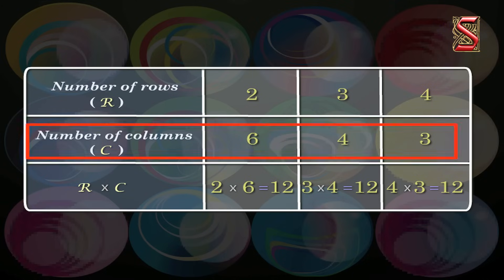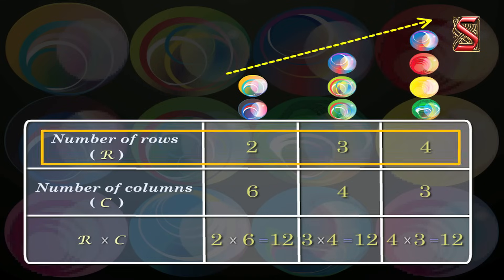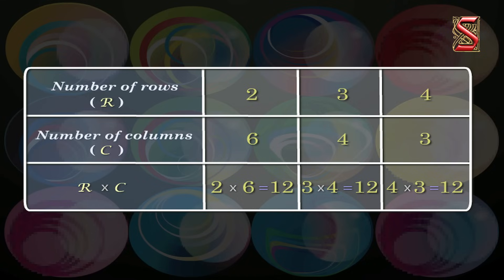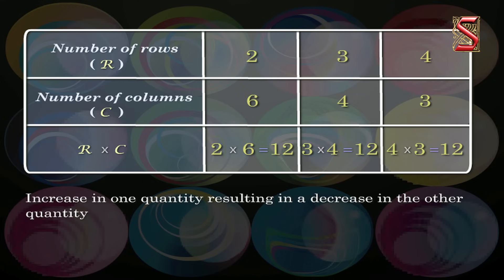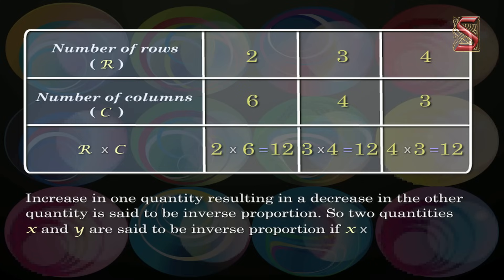In all the above situations, we saw that as one quantity increases the other quantity decreases. Such a variation — an increase in one quantity resulting in a decrease in the other — is said to be inverse proportion. So two quantities X and Y are said to be in inverse proportion if X into Y is constant, that is XY equals K.